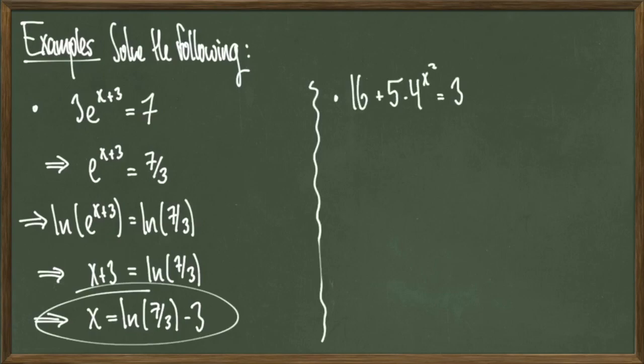And in our last example, solve 16 plus 5 times 4 to the x squared equals 336. I'll subtract 16 from both sides, and then I'll divide by 5 to get 4 to the x squared equals 64.